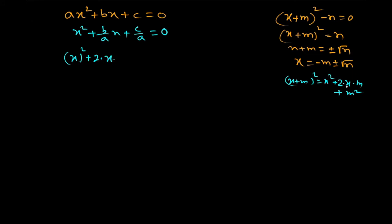Just see this formula — this is 2 into the first term into the second term. The first term is x and the second term should be b divided by 2a, so that 2 cancels and we get bx by a. That is bx by a, which matches our polynomial.